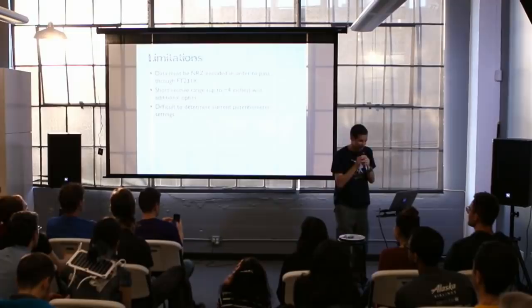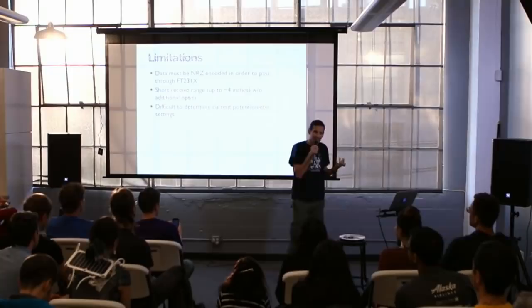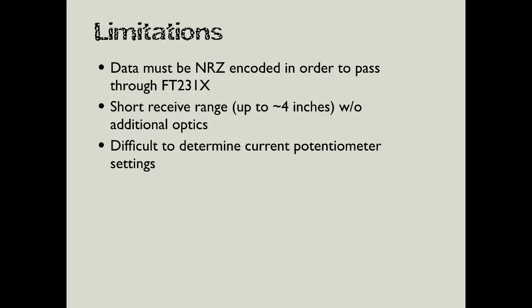So limitations of this particular design: the data has to be NRZ encoded if we want to use a terminal program and the USB to serial adapter to receive it — though you can use the test point earlier. Receive ranges are somewhat limited unless you're using a laser or have good optics. Another thing is it's hard to see what the potentiometer settings are. The potentiometers are surface mount, multi-turn pots, and they don't have stops at the end. So it's hard to visually know what your gain settings are for a particular target. Maybe in the future somebody could use digital pots to address this.